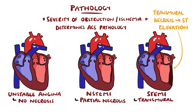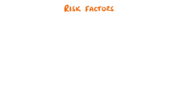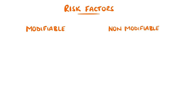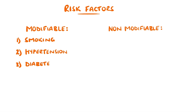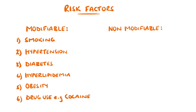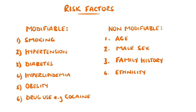Risk factors are divided into modifiable and non-modifiable. Modifiable ones include smoking, hypertension, diabetes and hyperlipidemia, obesity and drug use, including cocaine. Non-modifiable ones include age, male sex, family history and ethnicity.